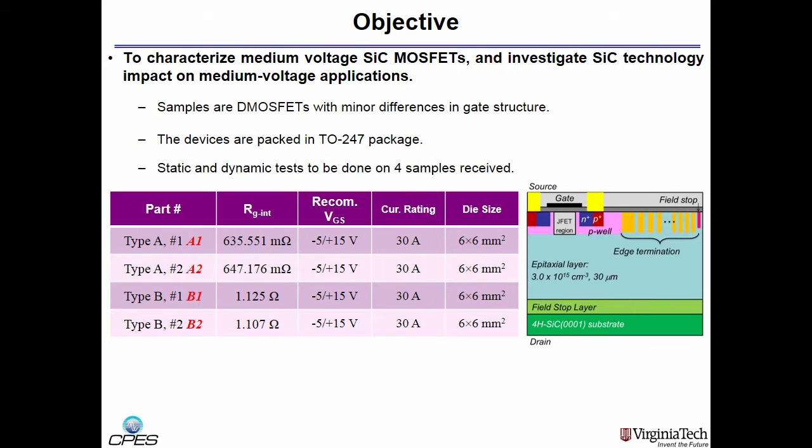The objective of this work is to characterize medium voltage silicon carbide MOSFETs and investigate silicon carbide technology impact on medium voltage applications. We need to characterize these devices because at this voltage rating, silicon carbide devices are not commercialized yet, so we first need to test our devices.